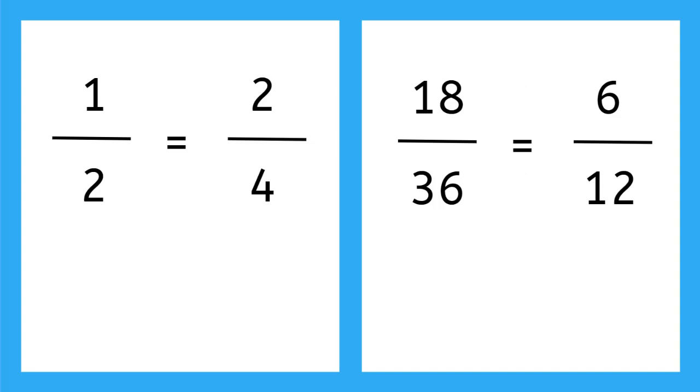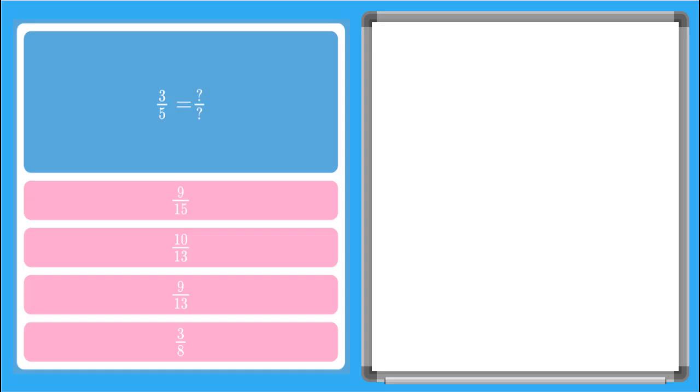Let's do some on our own. So this first one here, we're finding the equivalent fraction to 3 fifths or 3 over 5. We need to know what that equals. So remember, we either multiply or divide the top and the bottom by the same number.